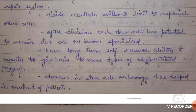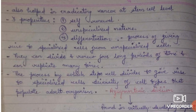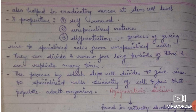There are three properties of a stem cell. First, self-renewal: the ability of a stem cell to give rise to cells of tissues, repair them, and maintain good tissue functioning. Second, unspecialized nature: stem cells are unspecialized cells which can differentiate at any stage and give rise to a large number of cell types. Third, differentiation: the process of giving rise to specialized cells from unspecialized cells.